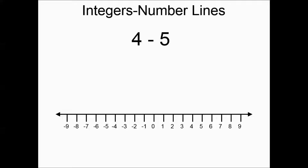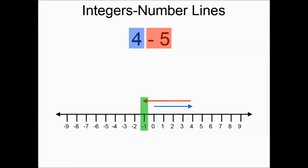Four minus five — you could think of it as four positives and five negatives. We go right four, then left five, and we end up at negative one. The arrows went in different directions. The negatives had the larger absolute value, so the answer was negative. You really did five minus four to get one, and it's negative since the negatives had the larger absolute value.